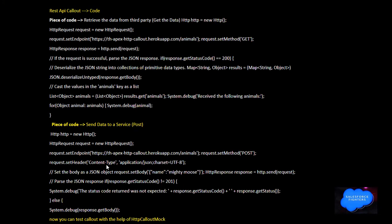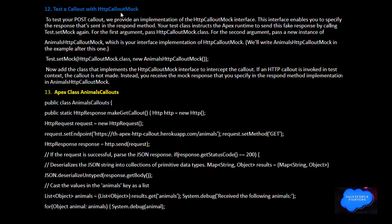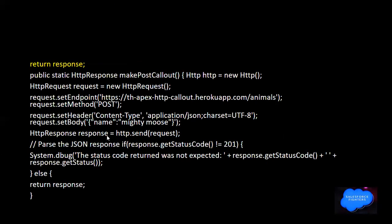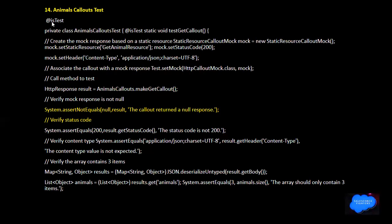HTTP Callout: this code sends data to a service via POST. To test a callout, use the HttpCalloutMock interface to specify the response. This interface enables you to specify a response that is returned in Apex runtime to send a fake response by calling the test and passing an HttpCalloutMock class as the first argument and a new instance as the second argument.